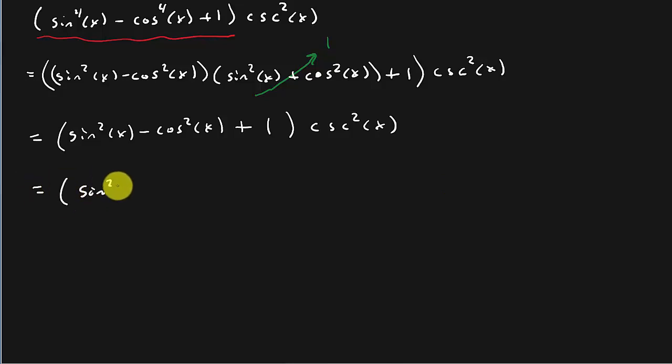So I've got sine squared x minus, now remember cosine squared is 1 minus sine squared, and then plus 1 times cosecant squared x.